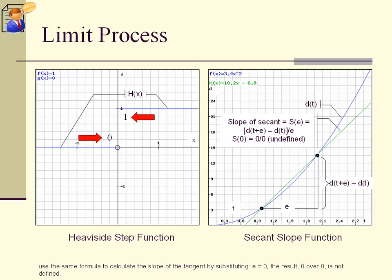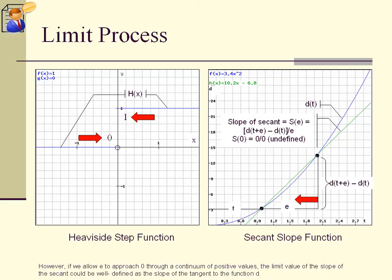However, when we use the same formula to calculate the slope of the tangent by substituting e equals 0, the result, 0 over 0, is not defined. However, if we allow e to approach 0 through a continuum of positive values, the limit value of the slope of the secant could be well defined as the slope of the tangent to the function d.